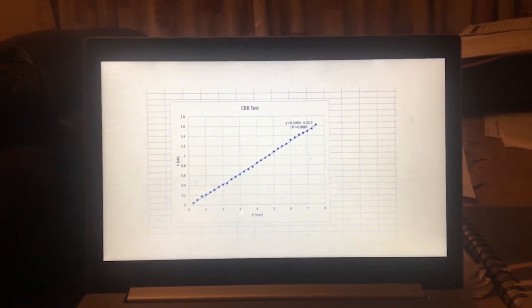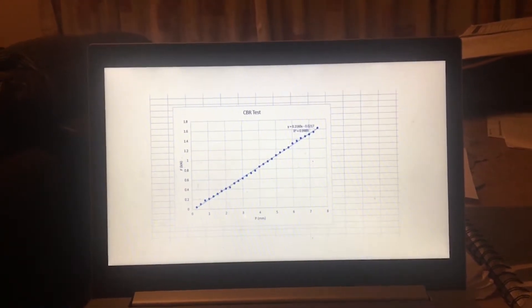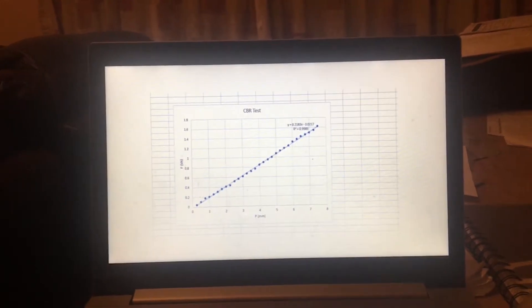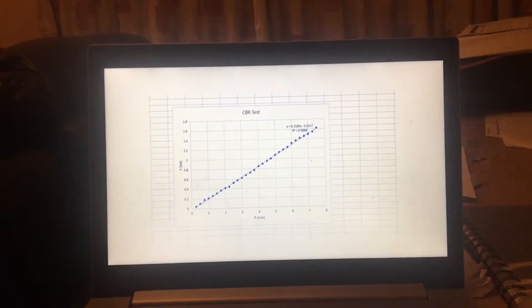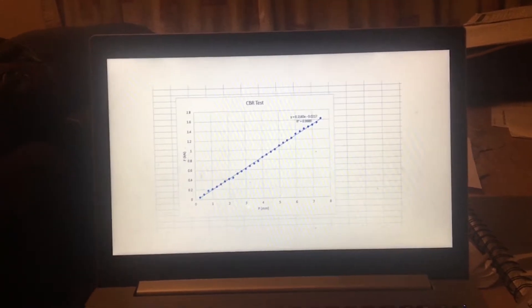Next was the CBR or California bearing ratio test, which is used to assess the strength of the soil type. This is important as we attempt to assess which sub-grade layer we feel will be best suitable to build our dam on.